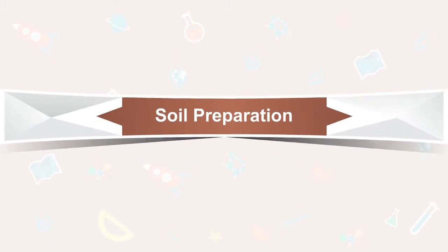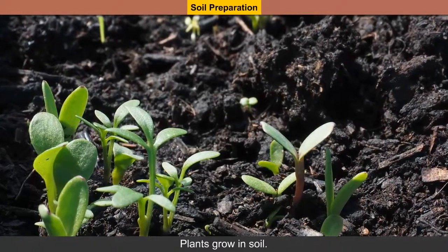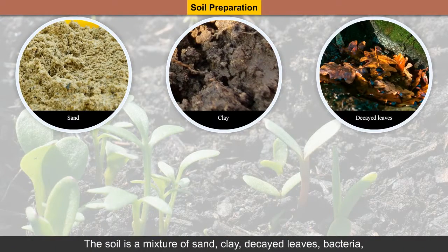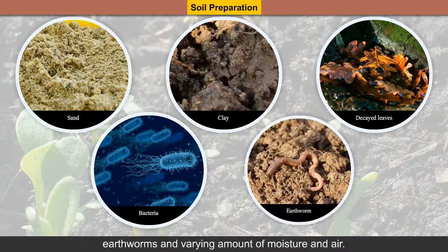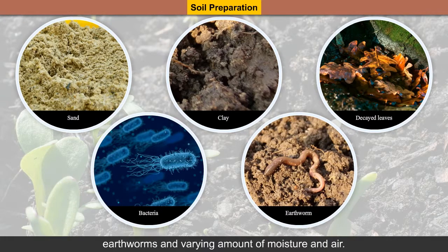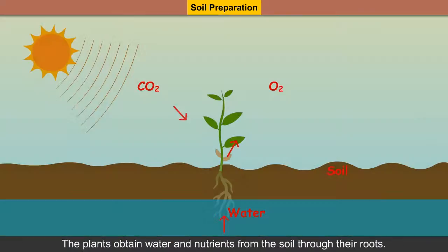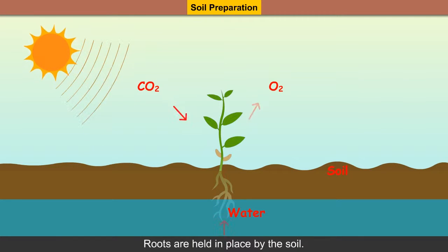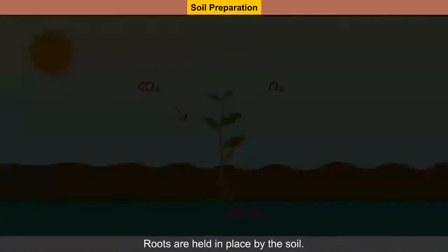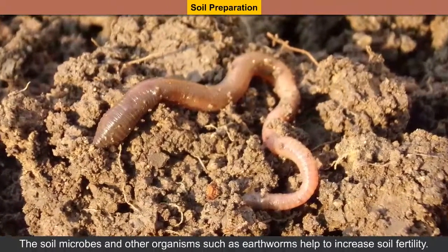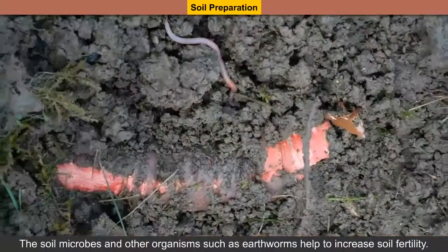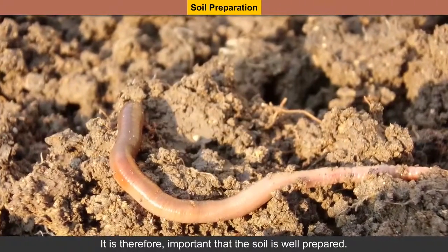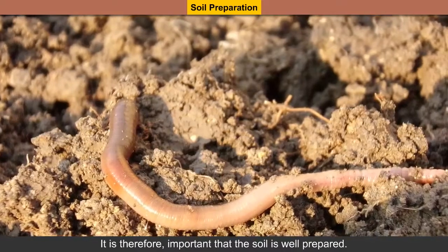Soil preparation: Plants grow in soil. The soil is a mixture of sand, clay, decayed leaves, bacteria, earthworms, and varying amounts of moisture and air. The plants obtain water and nutrients from the soil through their roots. Roots are held in place by the soil. The soil microbes and other organisms such as earthworms help to increase soil fertility. It is therefore important that the soil is well prepared.